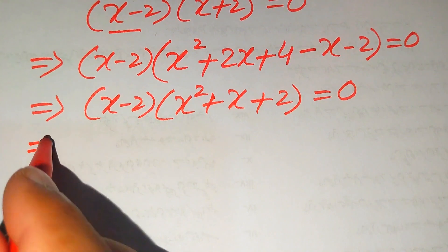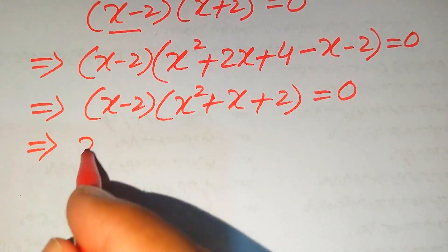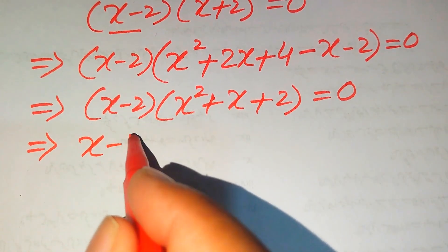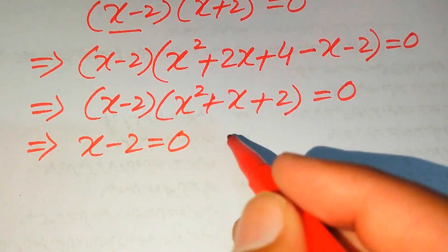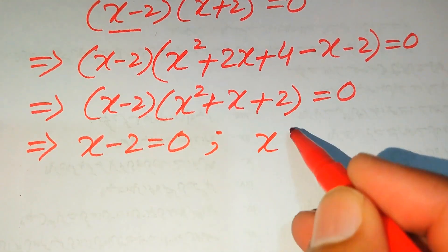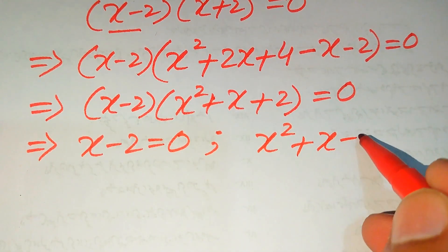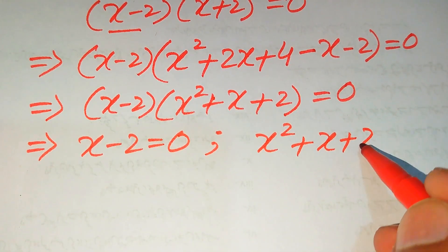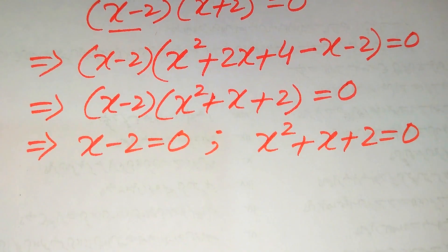In the next step we split into two cases. The first case is x minus 2 equals 0, and the second case is x squared plus x plus 2 equals 0.